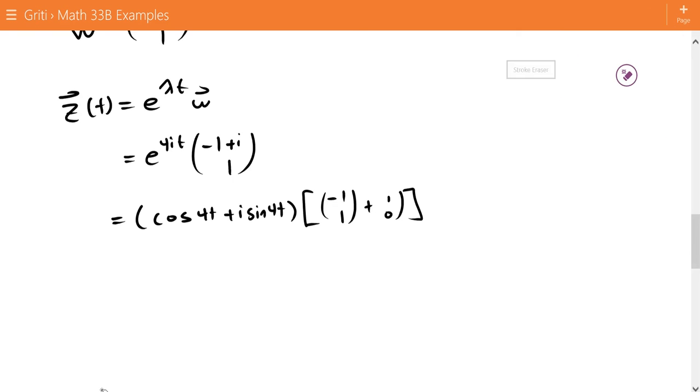We can write i, 0 actually as i times 1, 0. So now we just multiply this out.